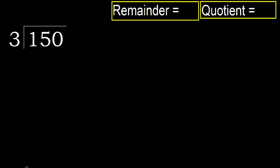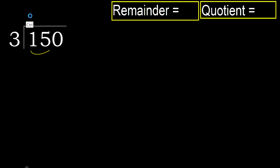150 divided by 3. 1 is less, therefore next. 15 is not less, therefore with 15: 3 multiplied by which number is nearest to 15 but not greater? 3 multiplied by 6 is 18 — 18 is greater. 3 multiplied by 5 is 15 — 15 is not greater.